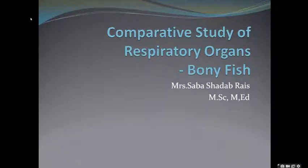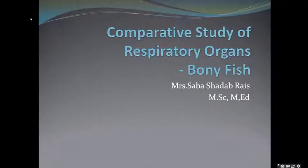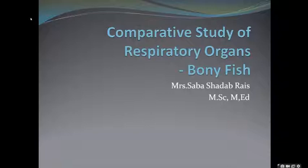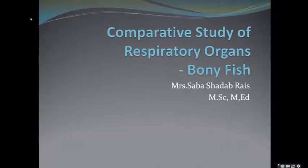Let me give you a small brief about the fish. Fish are basically of two types: the cartilaginous fish and the bony fish. All fishes belong to the phylum Chordata, which we also call Vertebrata. Animals that comprise the notochord or vertebral column are included in the phylum Chordata. Bony fish have the superclass Osteichthyes, and the other group is the cartilaginous fish.